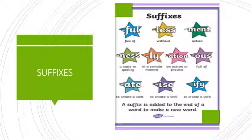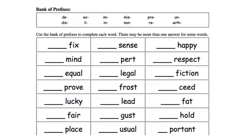A suffix is added to the end of a word to make a new word. I've attached two exercises. The first one says 'bank of prefixes' and you have all of them listed there, with words underneath. You can write this in your book or do it any other way you prefer, as long as you complete it. It says: use the bank of prefixes to complete each word. There may be more than one answer for some words. You have the word bank — I give you the words and you need to add the prefixes.